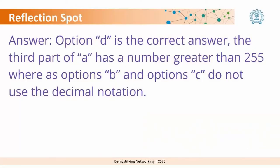Those of you who chose option D — yes, it is the correct answer. When we look at option A, it has a number greater than 255, so it cannot be a valid IP address. For options B and C, they do not use the dotted decimal notation; they use commas or hyphens instead.